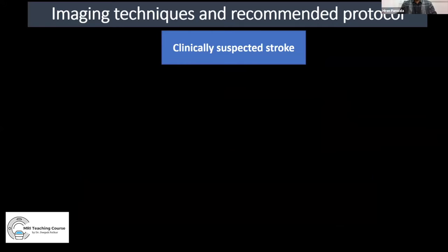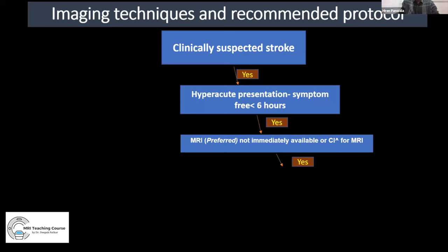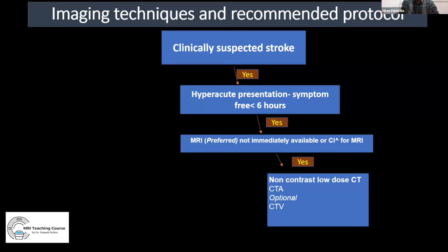The AIC and society are formulating imaging protocols and guidelines for suspected stroke. This flowchart proposes that for a clinically suspected stroke presenting in less than six hours, if MRI is not available, low-dose CT scan with CT angiography should be performed, with optional CT venogram if venous sinus thrombosis is suspected.